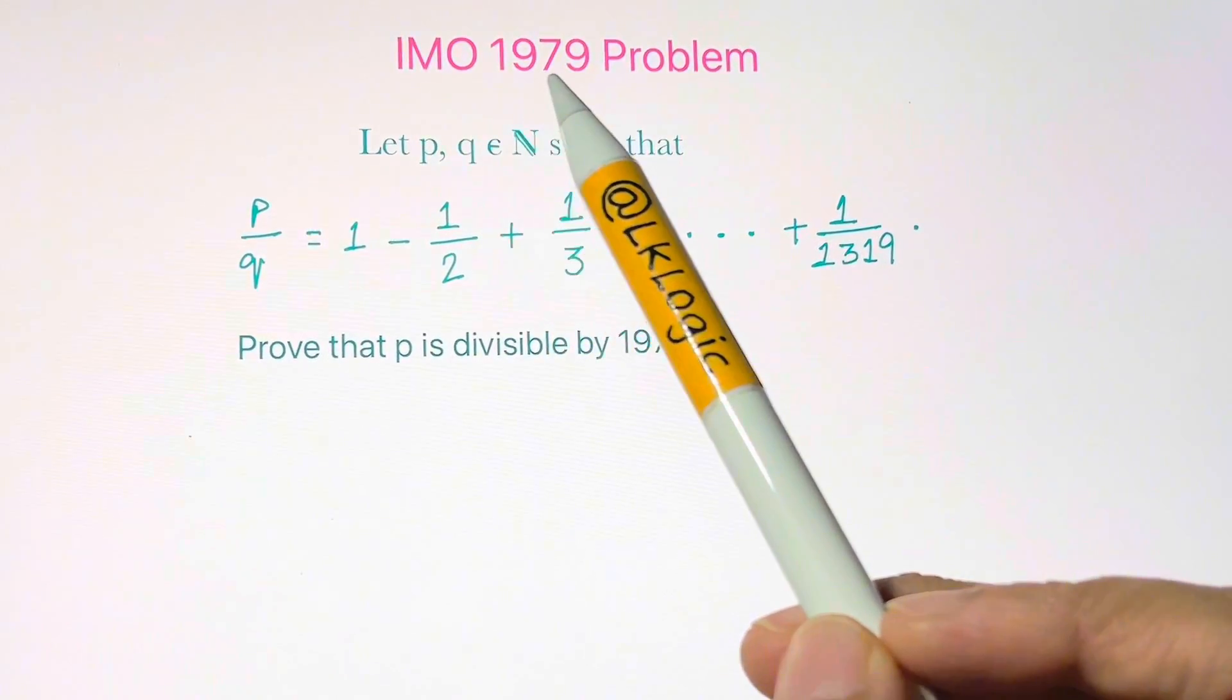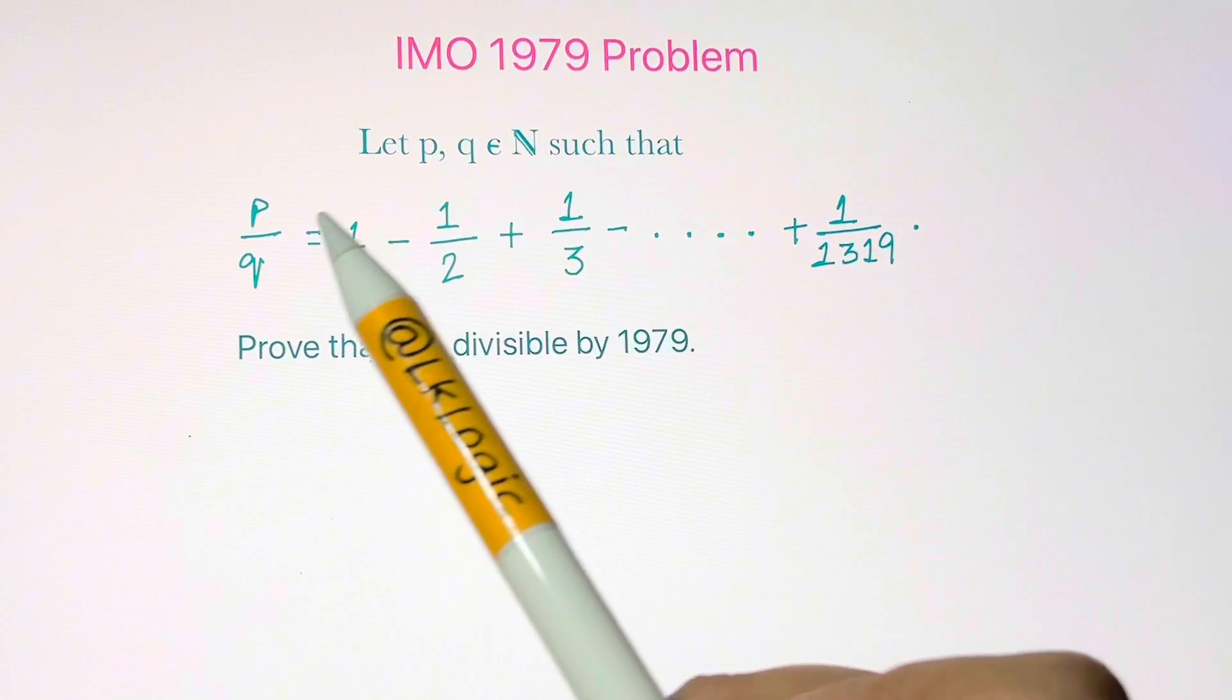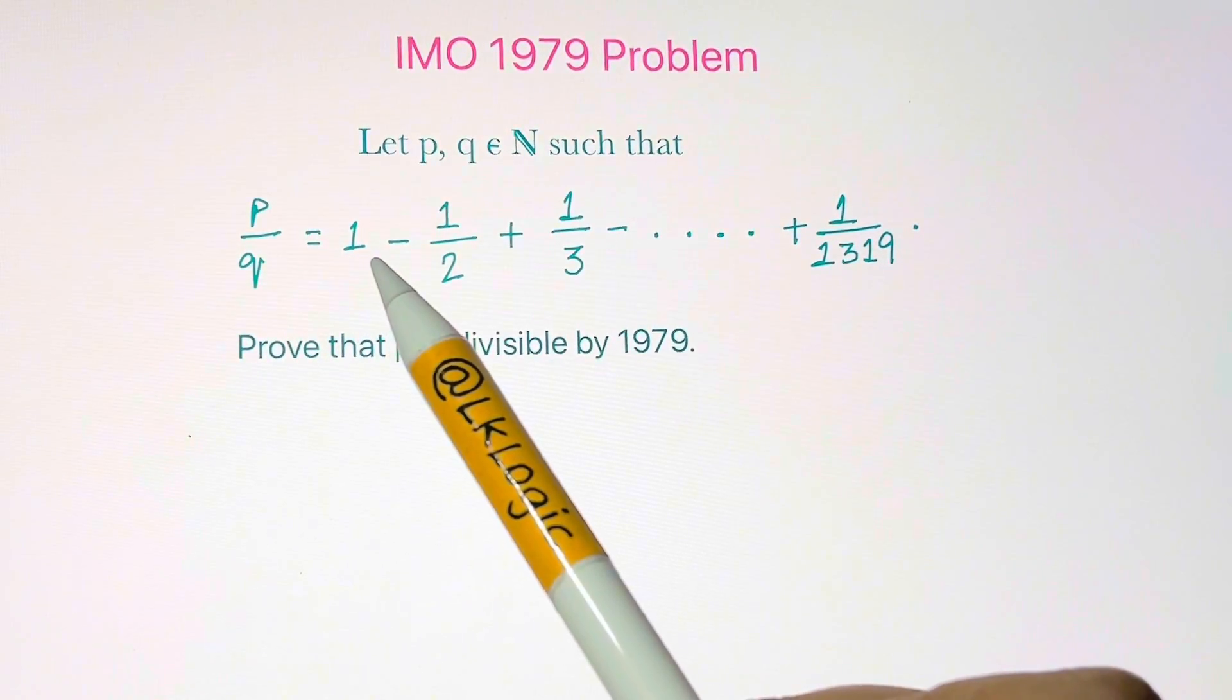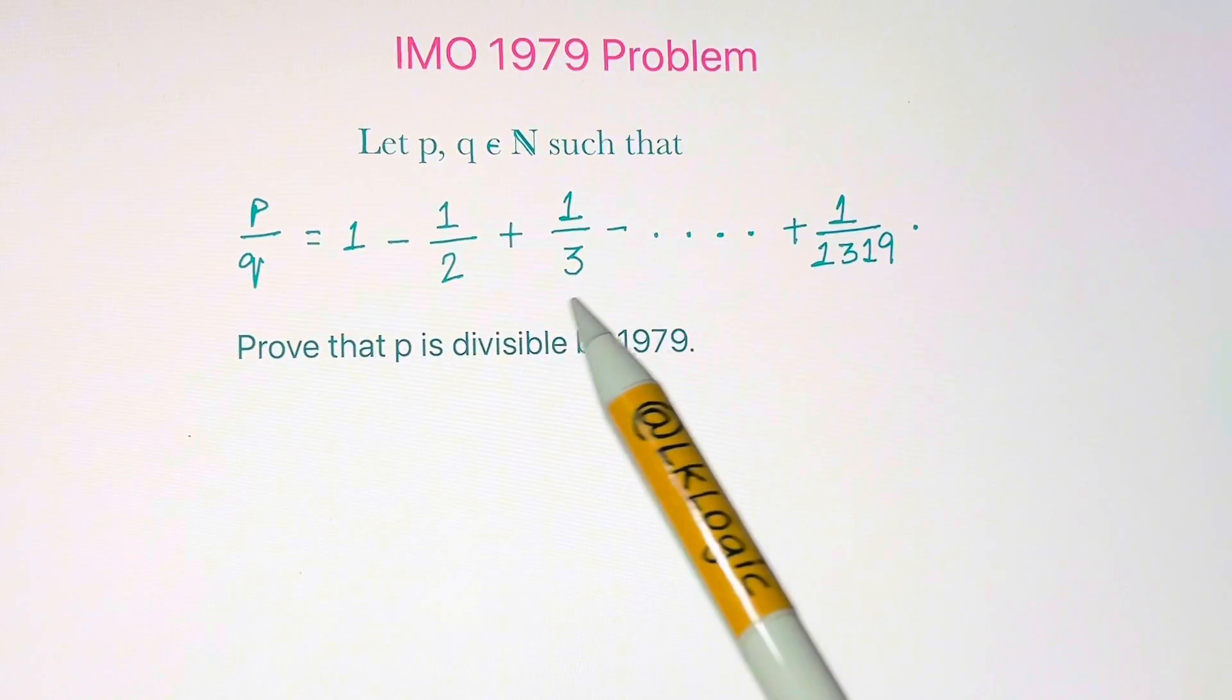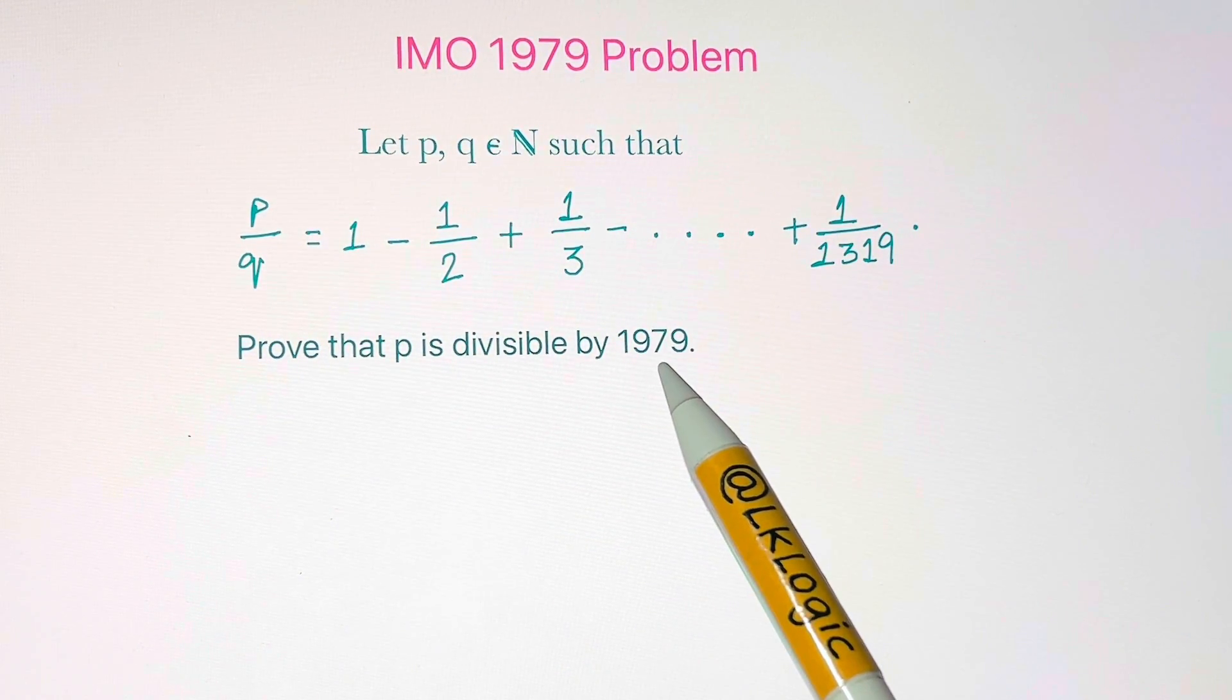Hi guys, in this video we're going to solve an International Mathematical Olympiad problem which says let P, Q belong to natural numbers such that P over Q equals 1 minus 1 over 2 plus 1 over 3 minus, which is an alternating series. We have to prove that P is divisible by 1979.